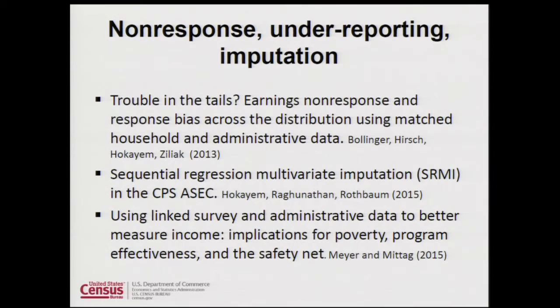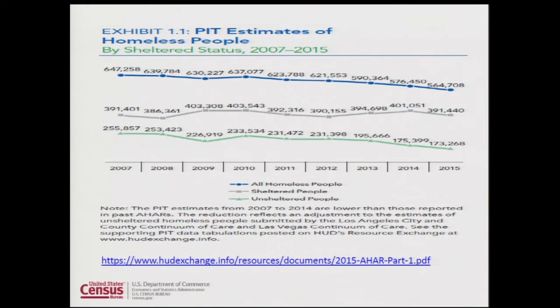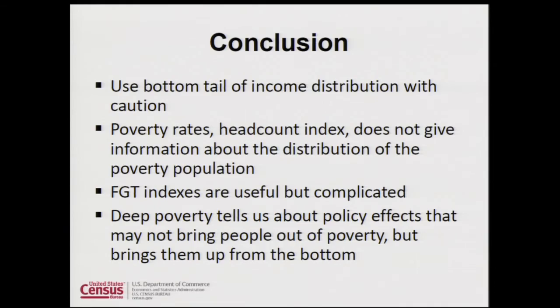A word of caution: there is a lot of work suggesting that as we move down the income distribution, our data become much less reliable. We need to encourage caution as we move to the very bottom of the income distribution regarding data quality. Also, our sample frame does not include unsheltered homeless people, so as homeless individuals move into shelters or households while remaining poor, that will increase our poverty rates. There is some evidence that the homeless population has been declining over time.